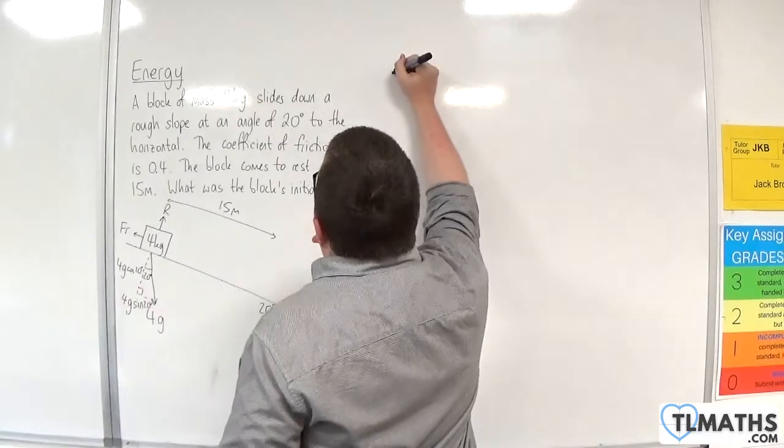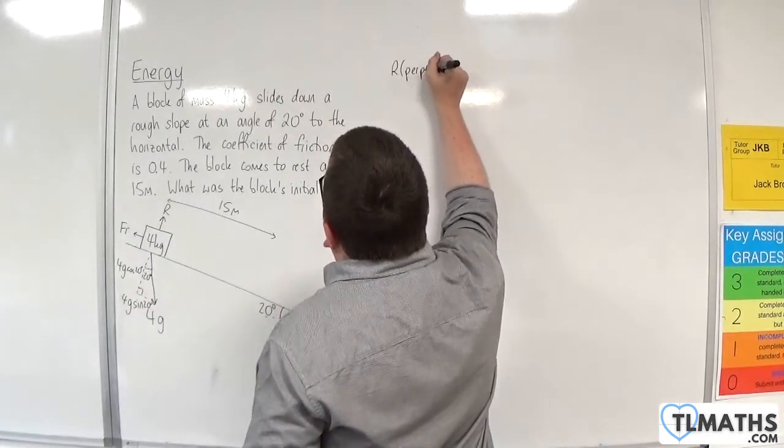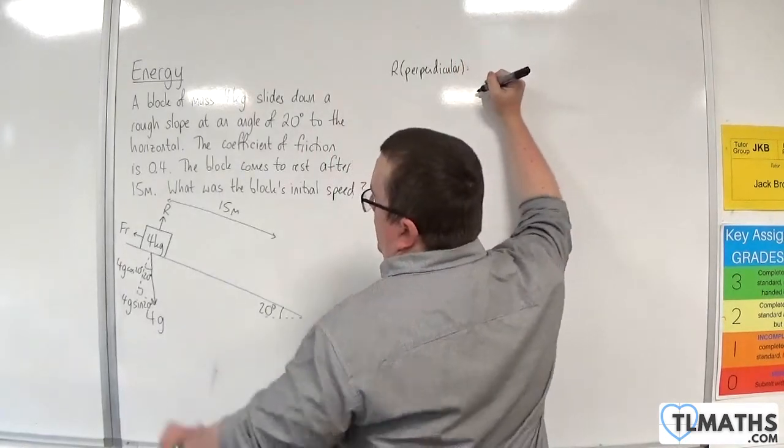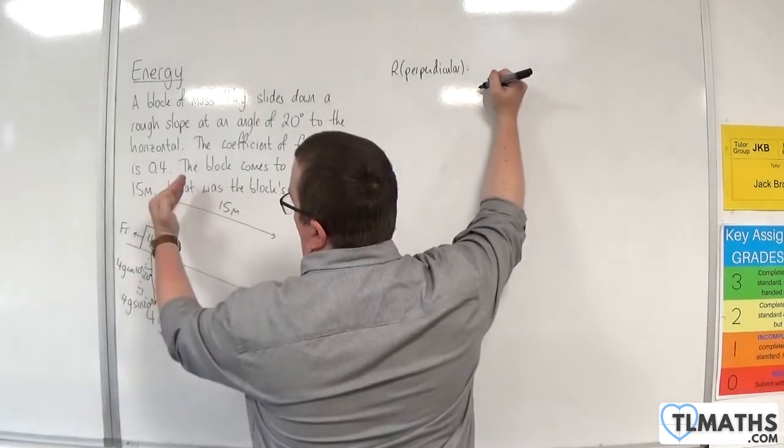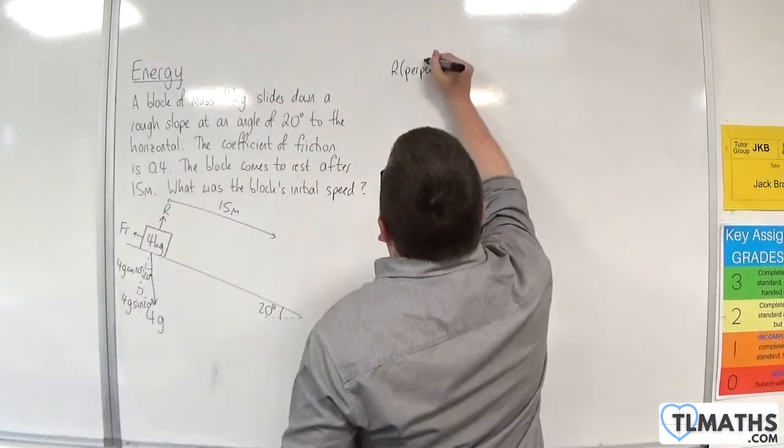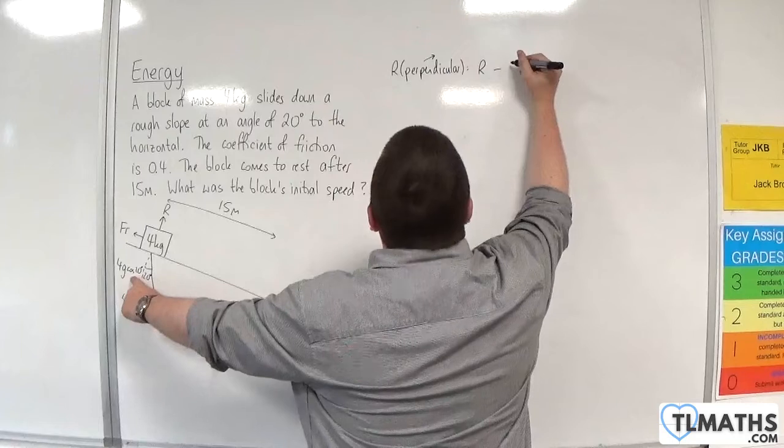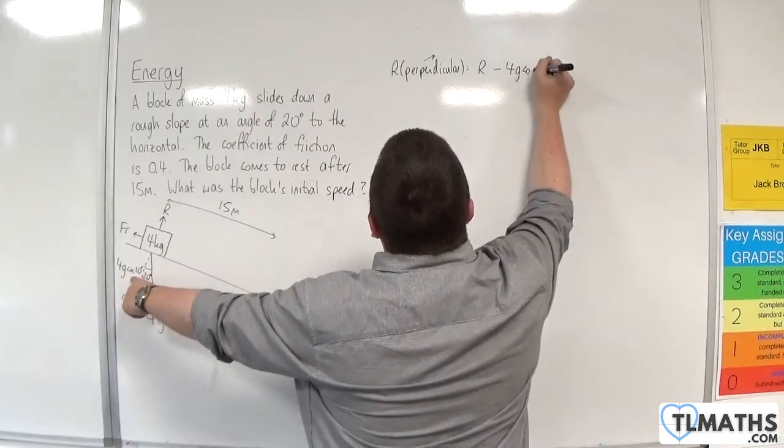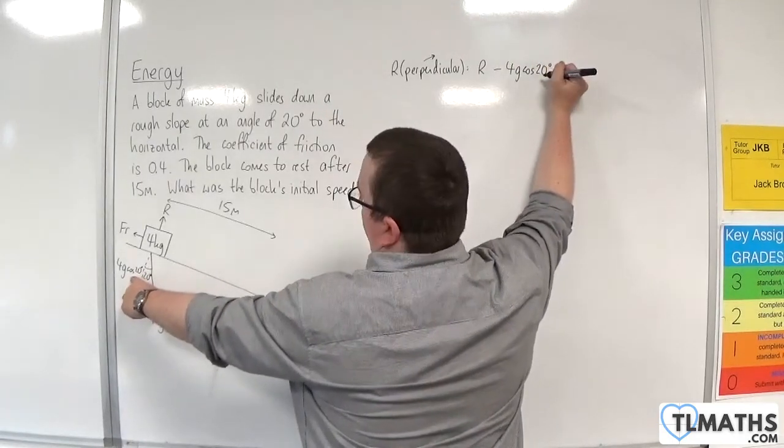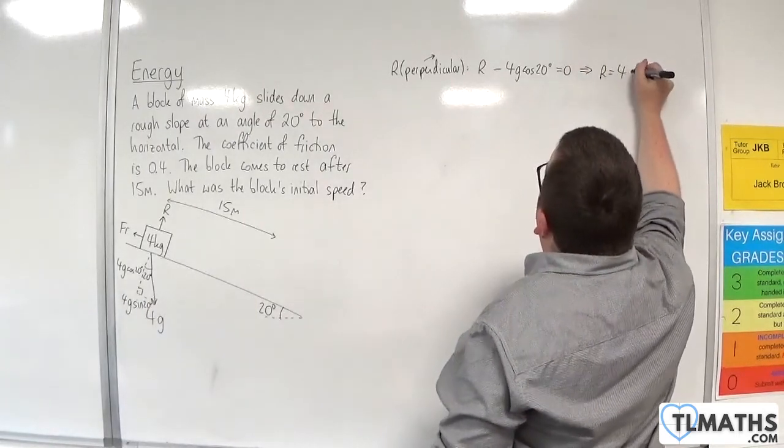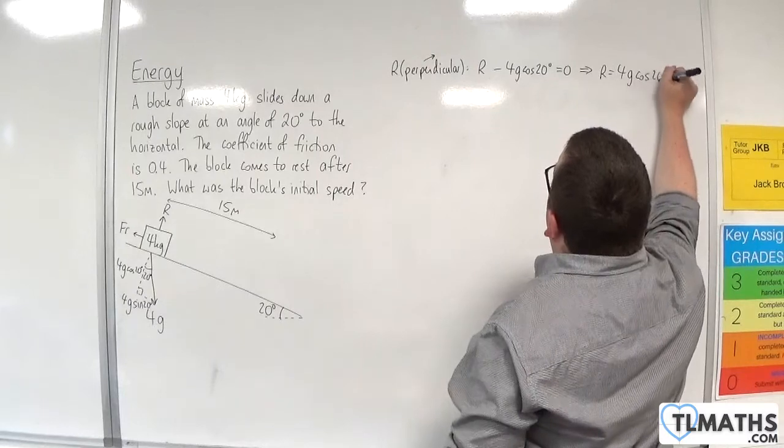So what I'm going to do is resolve perpendicular to the slope, taking that way as positive. So R take away 4g cos 20 is going to be equal to 0. So R is 4g cos 20.